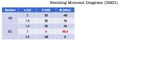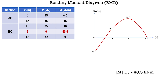After that, we add a row to the table to substitute the values of V and M when X equals 3 meters. Then we plot the moment values versus X in the bending moment diagram, and we can determine the maximum bending moment value, which is 40.5 kNm.